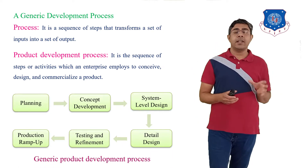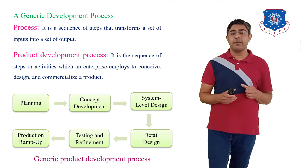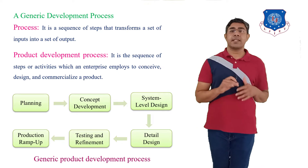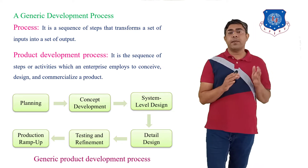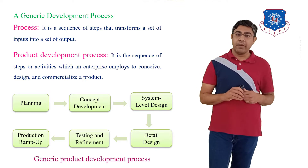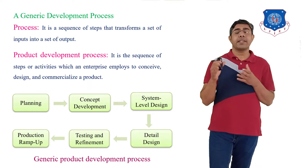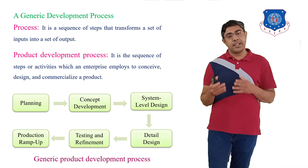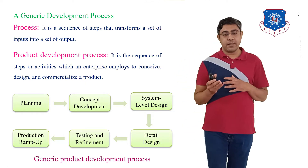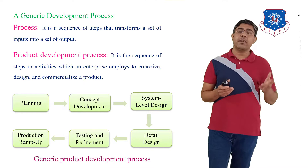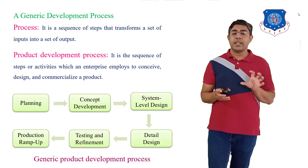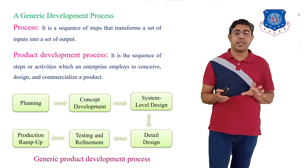The Generic Product Development Process has six steps. The first step is Planning, then Concept Development, followed by System Level Design, then Detail Design, then Testing and Refinement, and finally Production Ramp Up. These six steps of the Generic Product Development Process we have to learn.